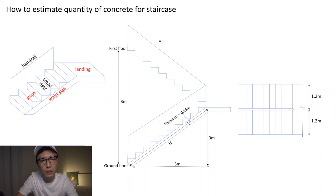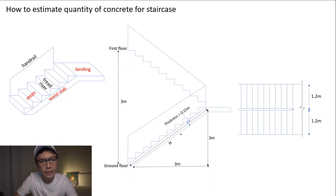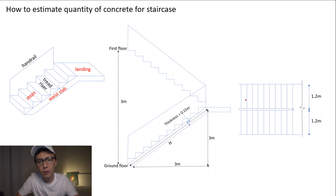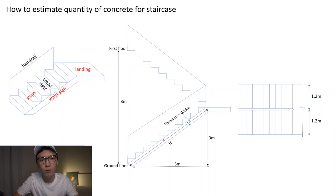Now look at the photo in the middle. This illustration shows the height of the floor — we have 3 meters — and the thickness of the waist slab, which is 0.15 meters. This is the height for one floor, which is 3 meters, and this is the length of the staircase, also 3 meters. The image on the right shows the width of each staircase: 1.2 meters and 1.2 meters. So this is basically all the information we have for the staircase calculations.